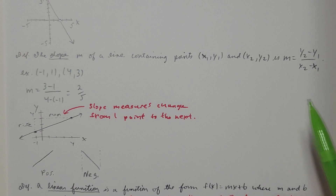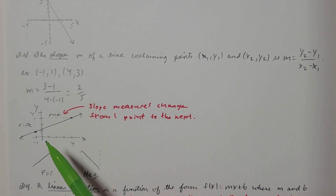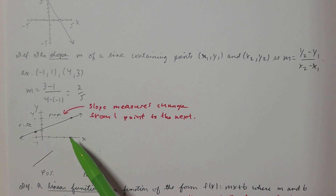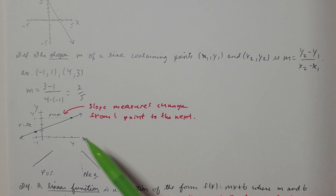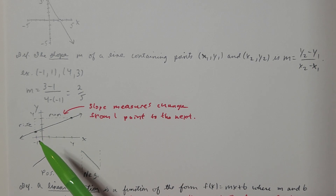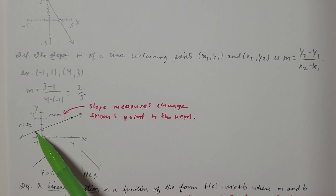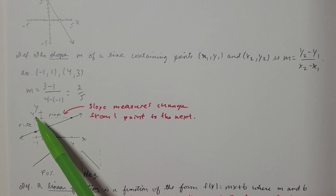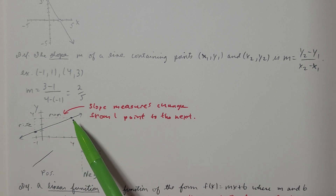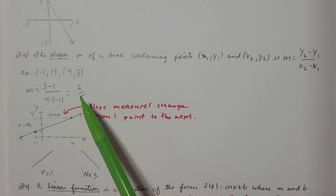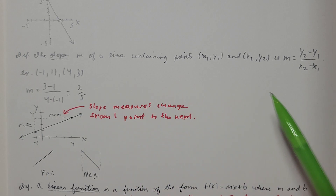Graphing those points — here's (-1, 1) and (4, 3) — and drawing the line, the slope is 2/5. You may have heard the terminology 'rise over run.' Starting at (-1, 1), I rise up 2 units and run to the right 5 units to get to the next point. Continuing — rise 2, right 5, rise 2, right 5 — I gather up a whole bunch of points on this line.